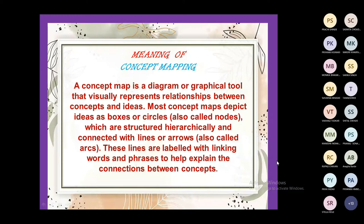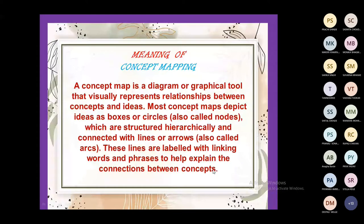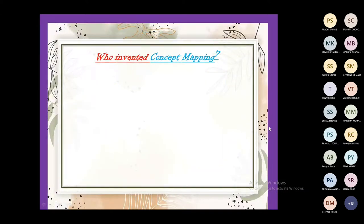Most concept maps depict ideas as boxes or circles, which are also called nodes. These are structurally connected with lines or arrows — that is a very important part of the concept map. These lines are also called arcs. The lines are labeled with linking words and phrases, which are very helpful to explain the connection between concepts — and these connection points are called nodes.